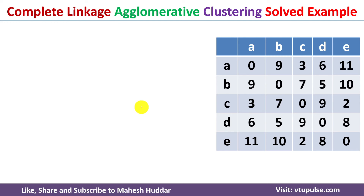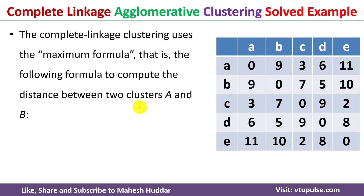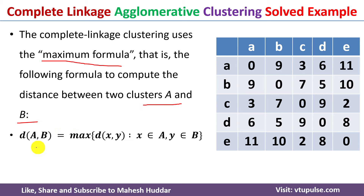Because we are using complete linkage agglomerative hierarchical clustering, we need to use the maximum distance formula to update the weight matrix. To calculate the distance between two clusters A and B, we use the formula: the distance between cluster A and B is always equivalent to the maximum distance between the data points present in cluster A and cluster B. I will discuss how to use this formula to update the weight matrix at the later stage.